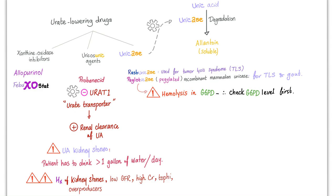Allopurinol and febuxostat are xanthine oxidase inhibitors. Probenecid inhibits URAT1, the urate transporter, increasing renal clearance of uric acid by preventing reabsorption — though this can increase the risk of kidney stones. Rasburicase and pegloticase are uricases: enzymes that destroy and degrade uric acid into soluble allantoin and other degradation products, which are then eliminated by the kidney.